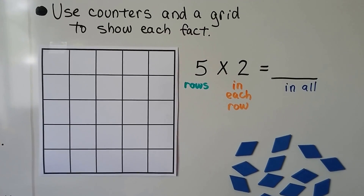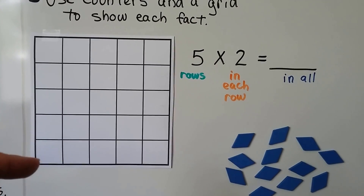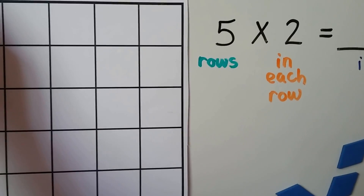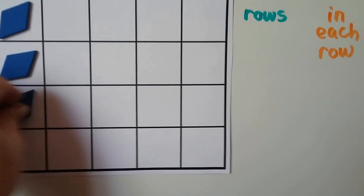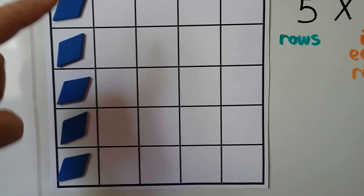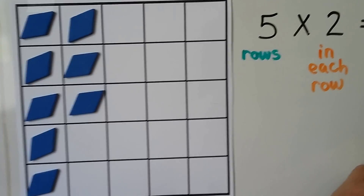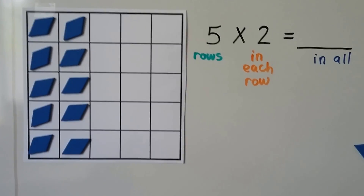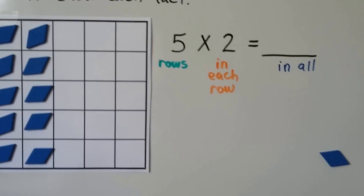If we're supposed to show 5 times 2, well, 5 is the number of rows we need. So we need 5 rows coming down, and there should be 2 in each row. We need 5 rows coming down — that's 5 — but we need 2 in each row. Now we have 1, 2, 3, 4, 5 rows, and there's 2 in each row. How many do we have in all? We can skip count: 2, 4, 6, 8, 10. We have 10.